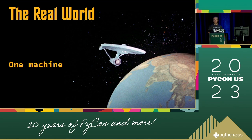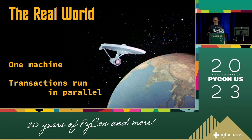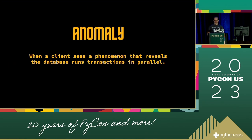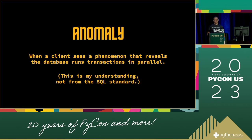In the real world, transactions run on one machine but in parallel. We'll deal with distributed databases later. Running in parallel can lead to different outcomes than if they were running one at a time, and these visible differences are called anomalies. An anomaly is when a client sees a phenomenon that reveals that the database is running transactions in parallel. The SQL standard lists a bunch of things and says these are anomalies.